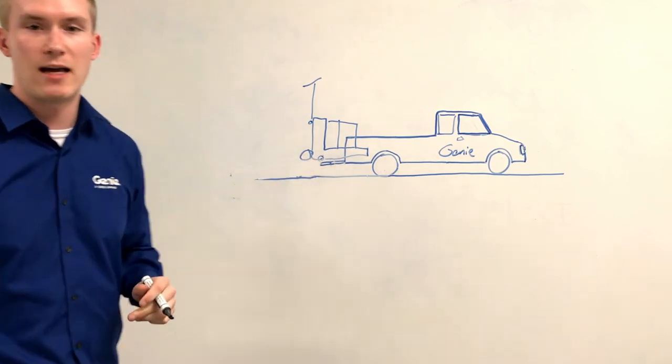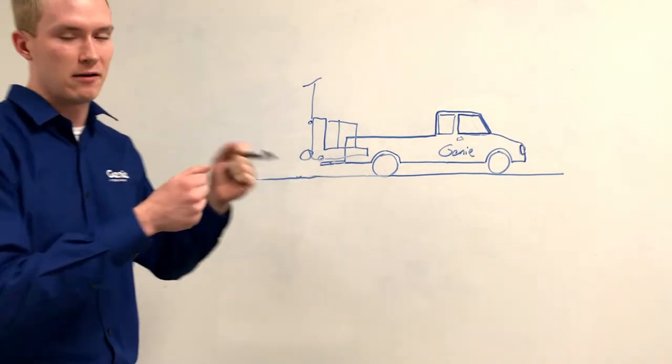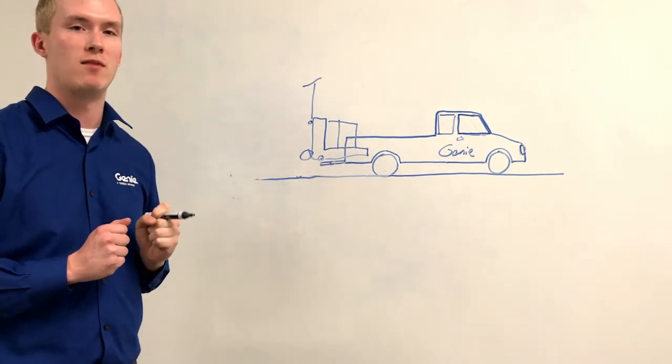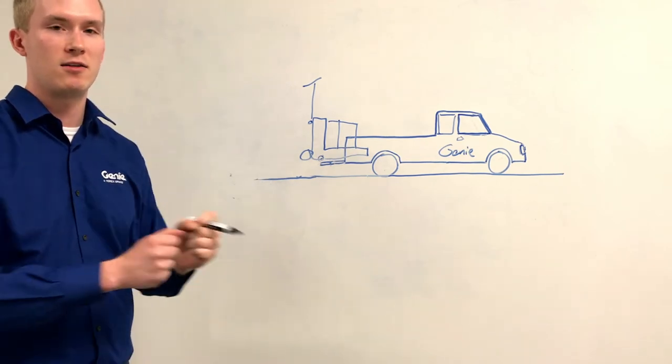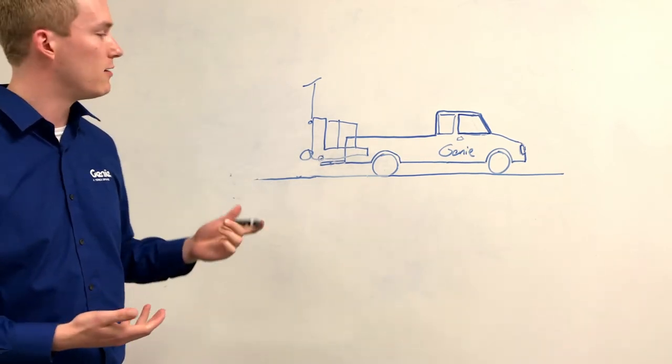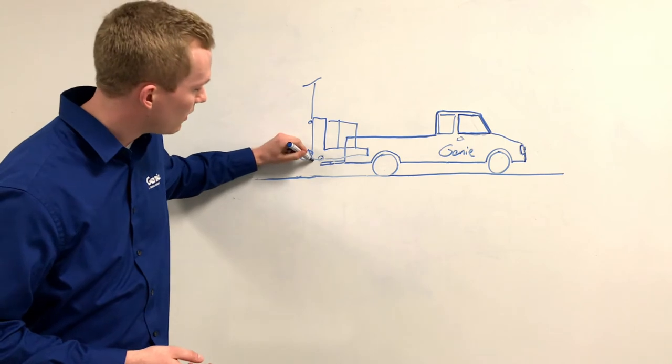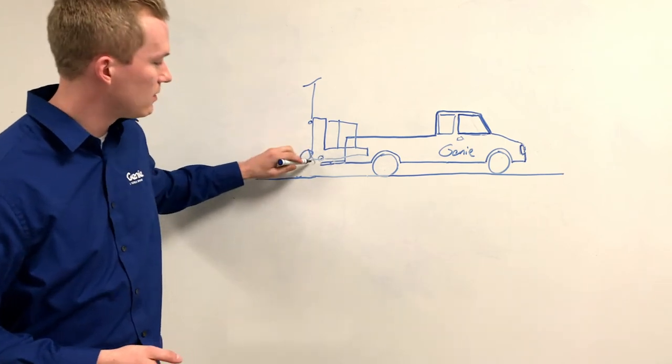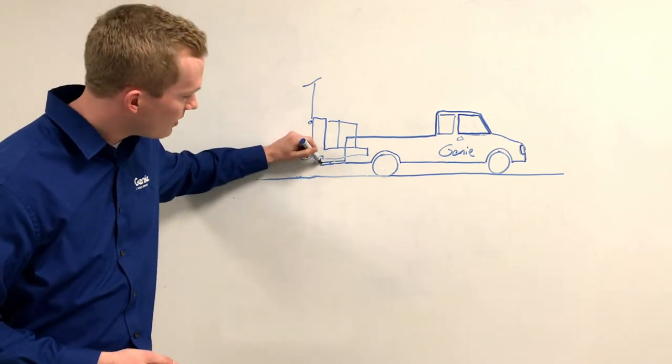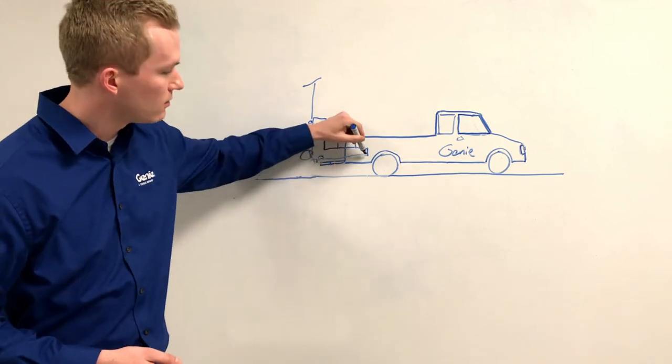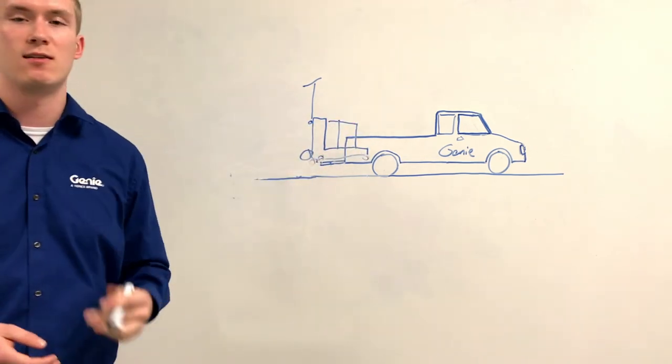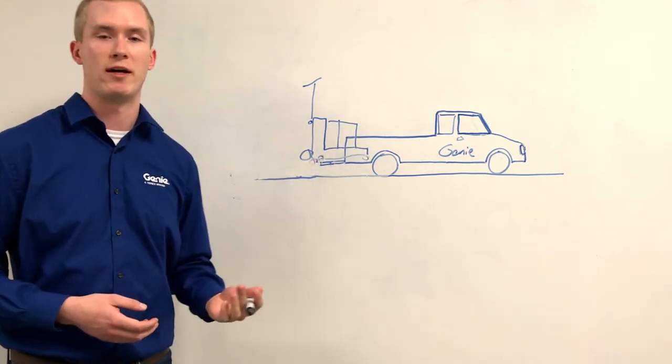Once we've got the AWP pivoted 90 degrees, we're now in a position where we can push the AWP into the pickup truck's bed. We're assisted here by a third set of wheels that you'll see on the rear of the machine, a slider block that is on the mast, and also a small set of wheels that is up near the lifting point at the top of the mast.